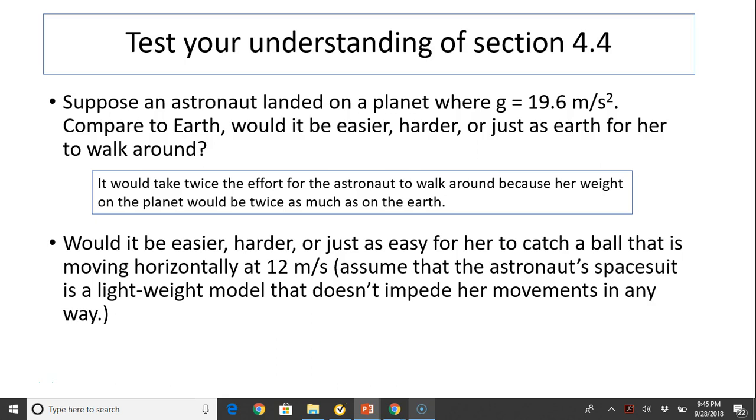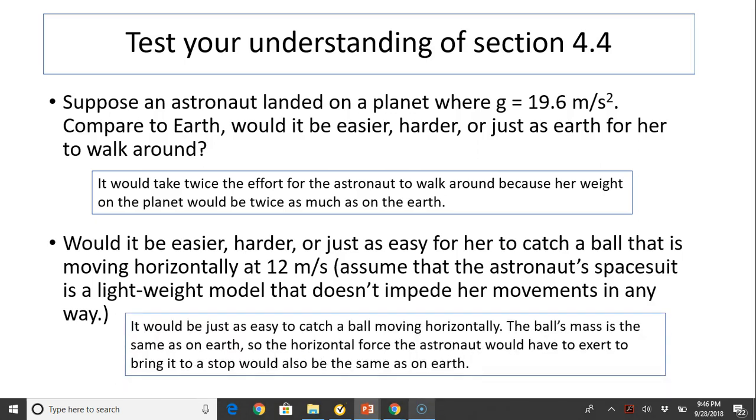Next question. Would it be easier, harder, or just as easy for her to catch a ball that is moving horizontally? Well, if the object moves horizontally, that does not affect the force. It would be just as easy to catch the ball moving horizontally. This is because the ball's mass is the same as on Earth. The horizontal force the astronaut would have to exert to bring it to a stop would also be the same because it's horizontal. Remember, horizontal and vertical are separate. So the gravity, g, only affects the vertical force, does not affect the horizontal force.